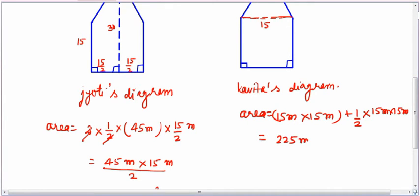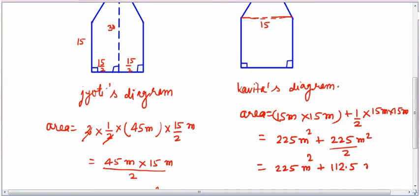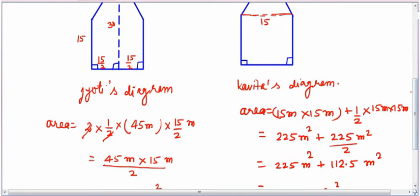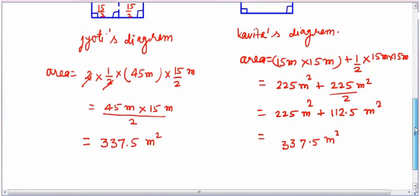Simplifying: 15 into 15 equals 225 square meters for the square, plus half into 15 into 15 equals 112.5 square meters for the triangle. Adding both: 225 plus 112.5 equals 337.5 square meters. In both cases the area is the same — 337.5 square meters. Whichever method we use, by Jyoti's or Kavita's diagram, we get the same area.